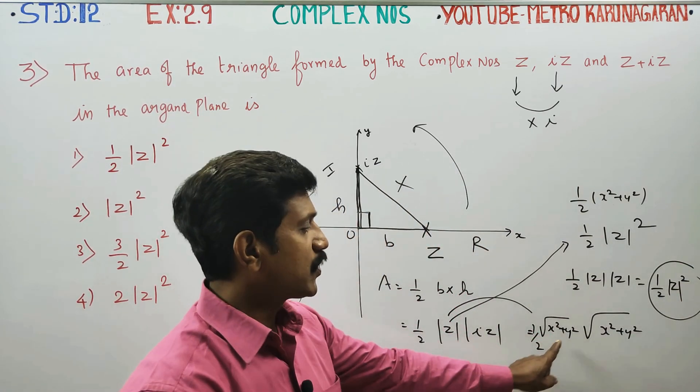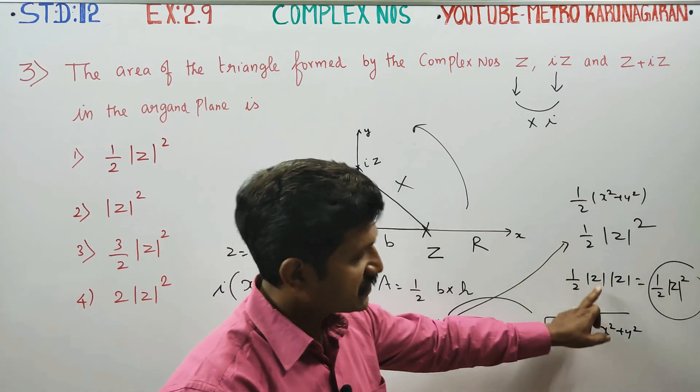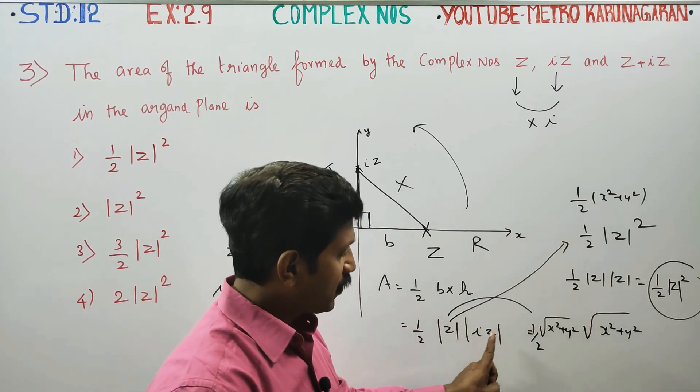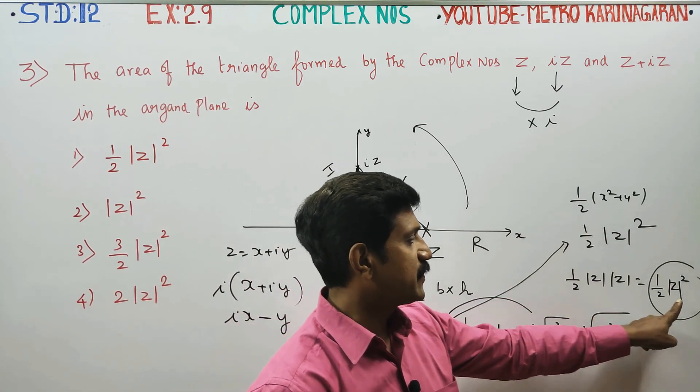You can use the modulus formula, you can use the direct formula. Modulus of IZ is the modulus of IZ. Direct formula, Z to IZ is the modulus of Z square.